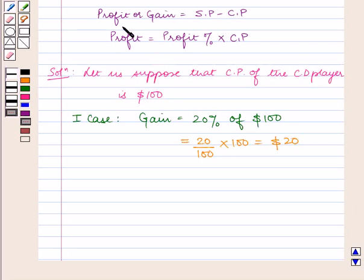Now, as profit or gain equals SP minus CP, therefore selling price equals profit plus cost price, which is $20 + $100 = $120.